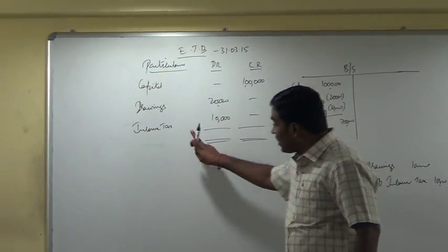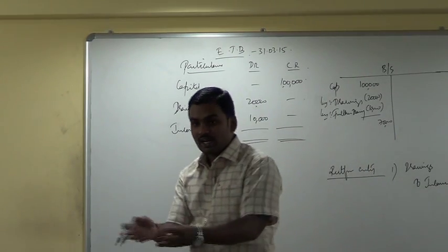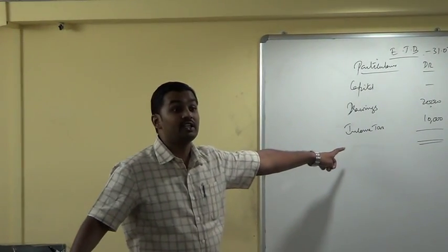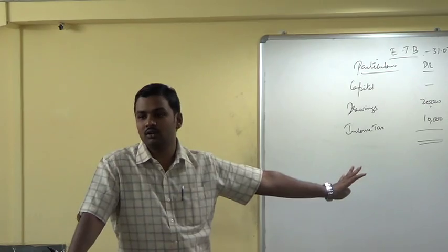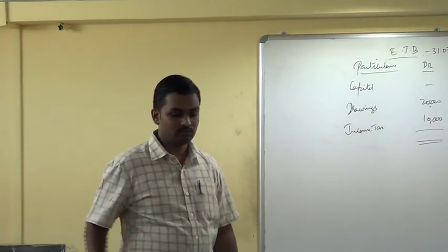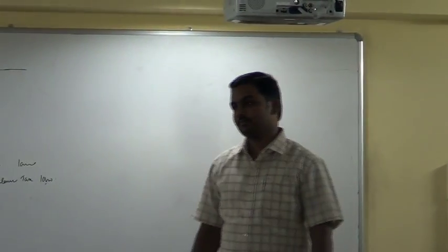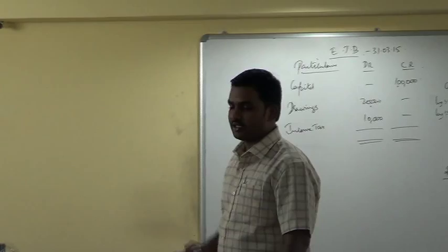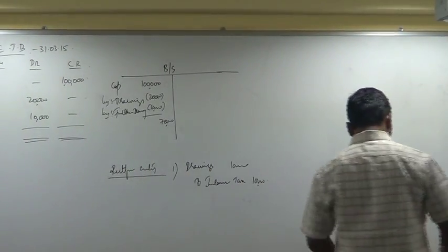Now suppose this was the trial balance of a partnership firm — then income tax can again be treated as drawings. But if it is the case of a company, then income tax is the liability of the company, and it has to be debited to the income tax account only. In the case of a company, this is how you deal with it. If income tax is shown as a debit balance in the trial balance of a sole proprietor, you have to assume it is wrongly debited and treat it as drawings. This is what income tax treatment is about.